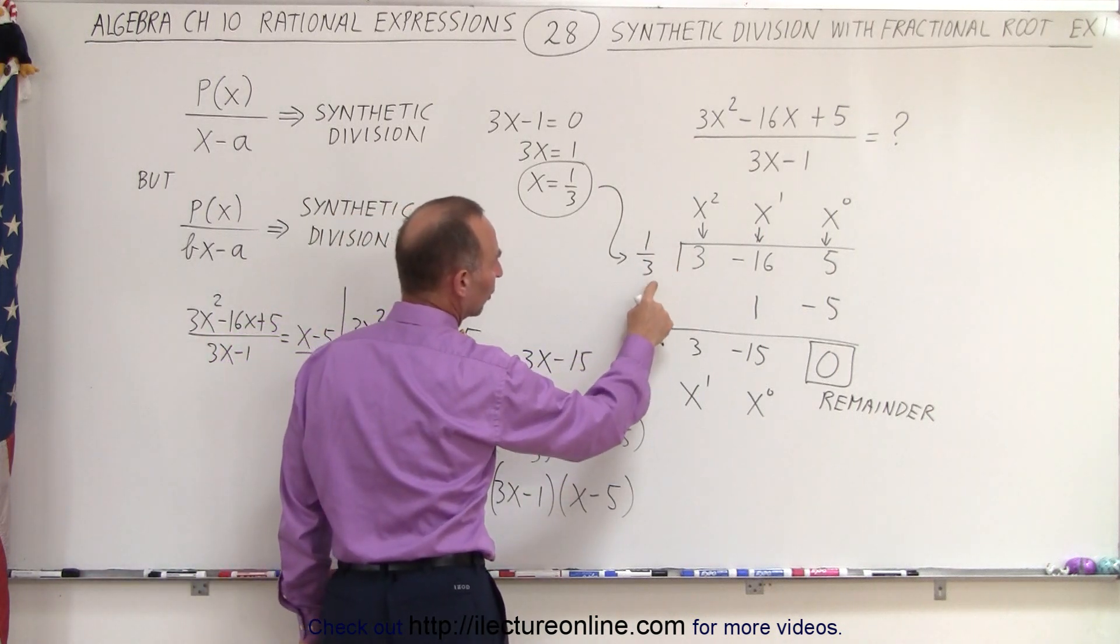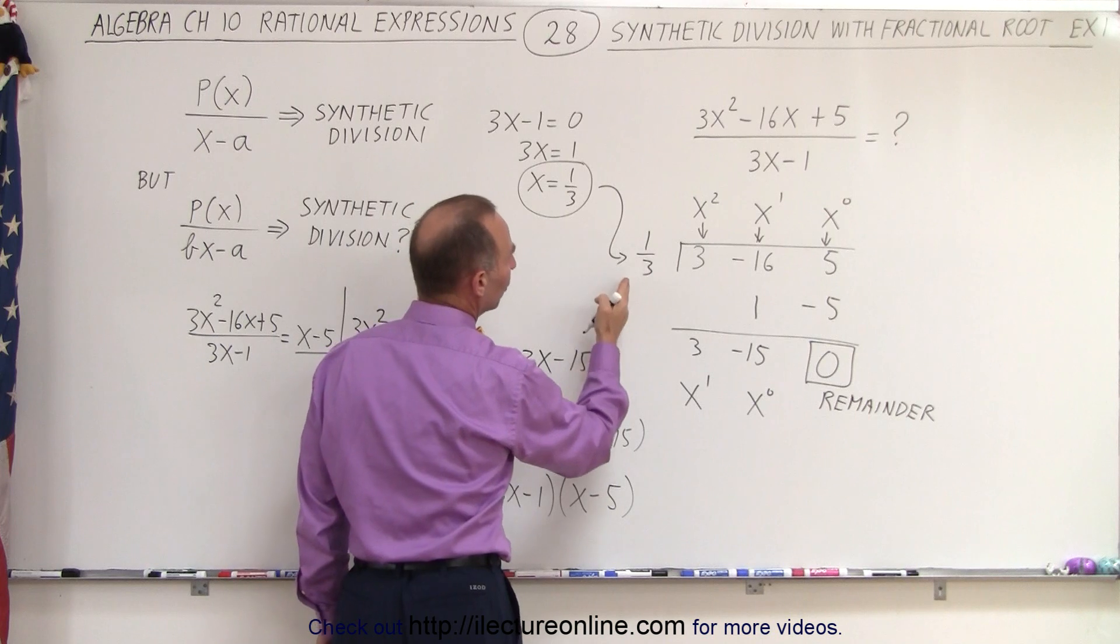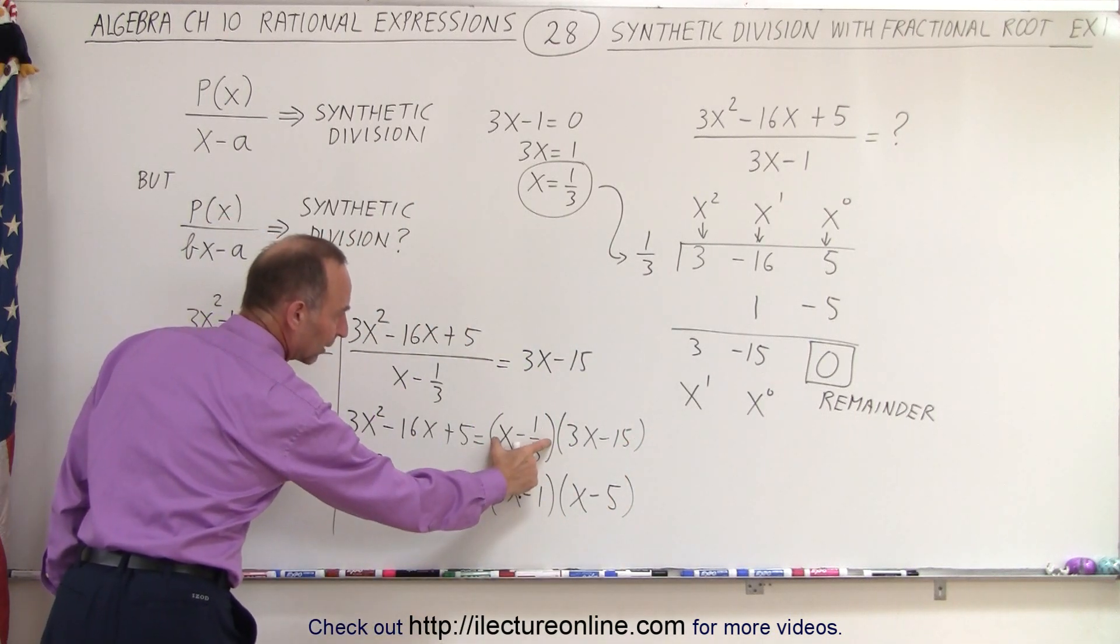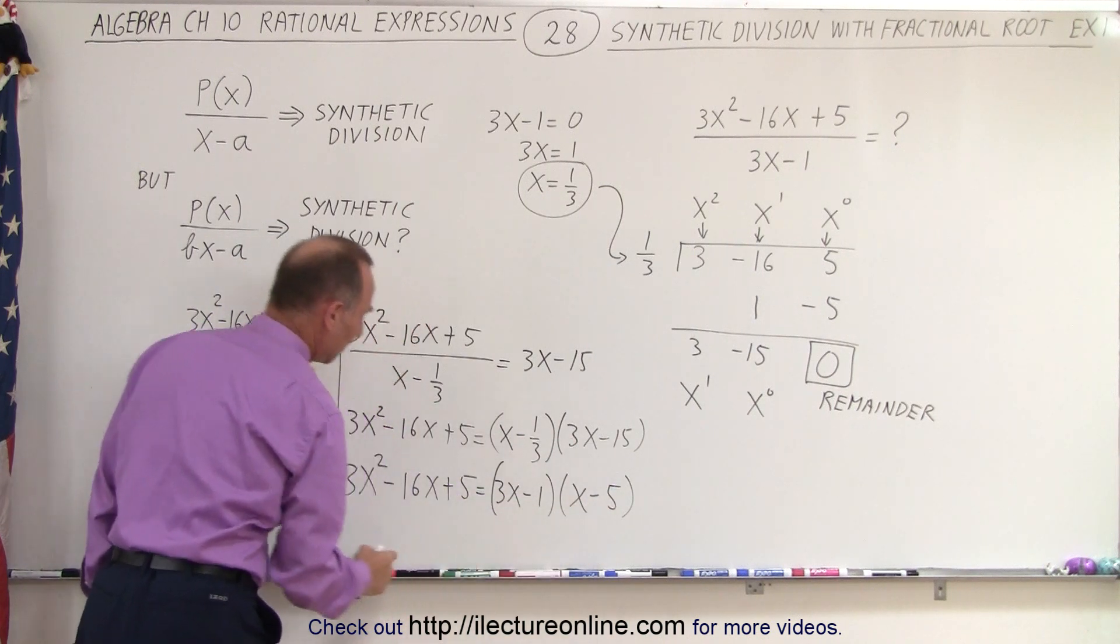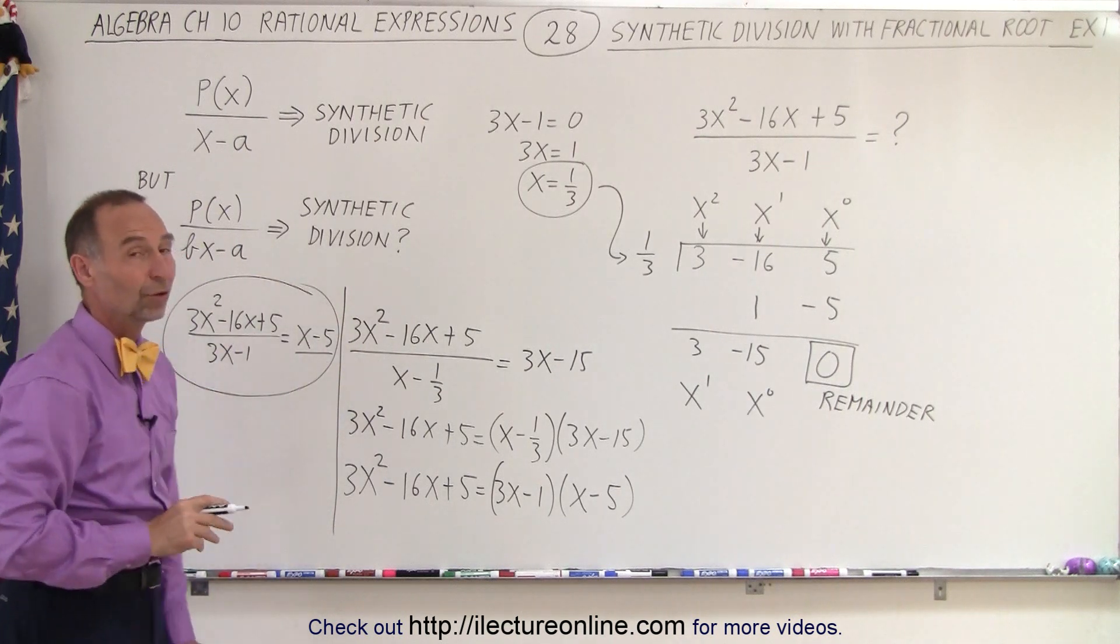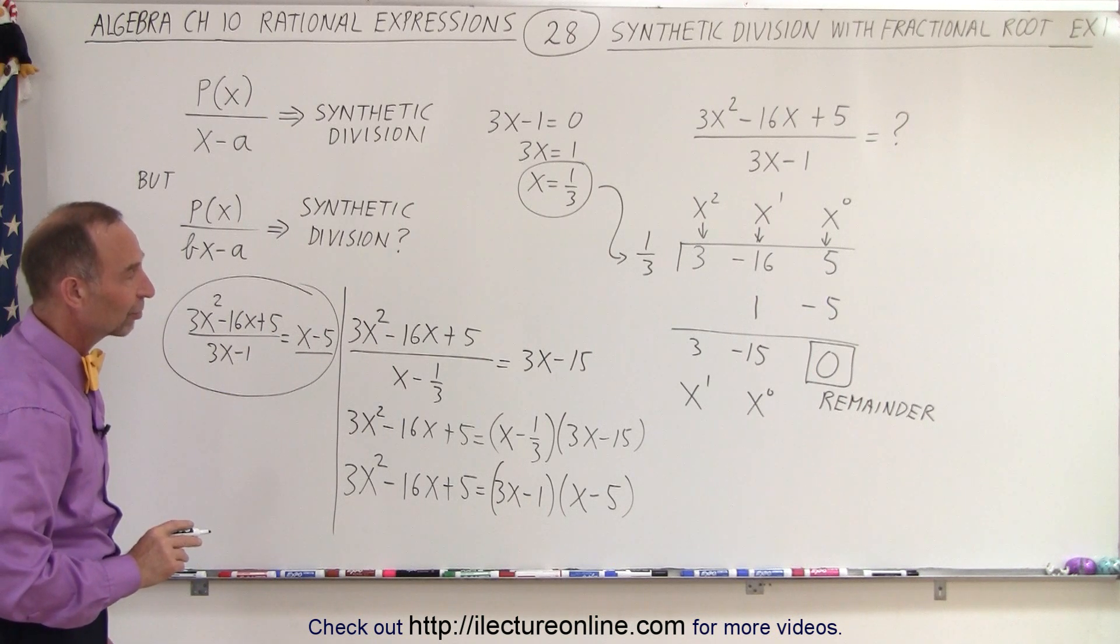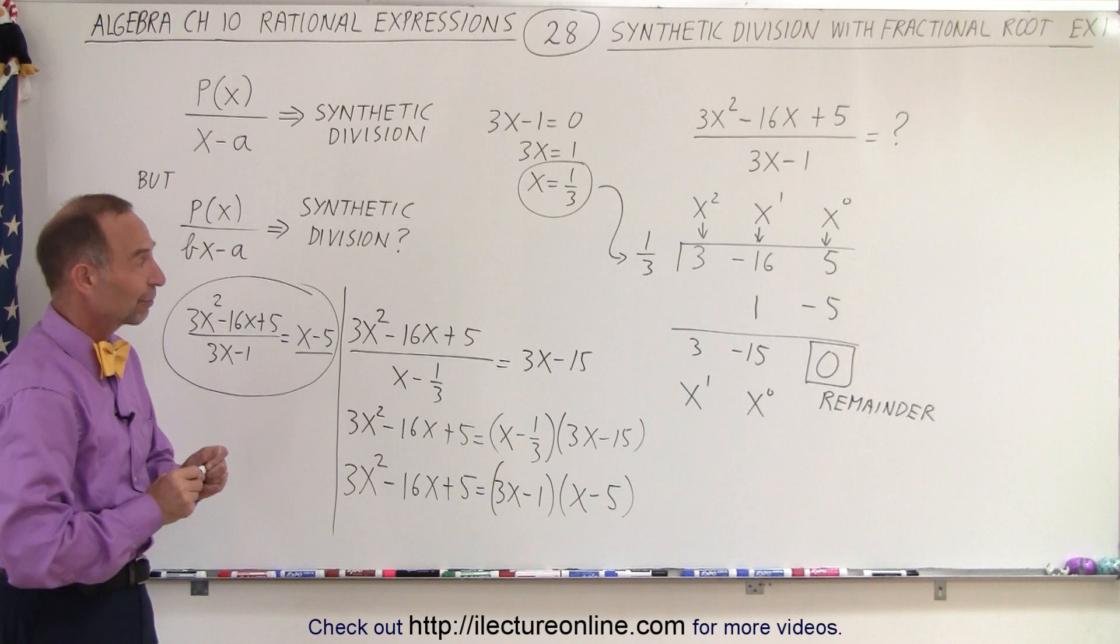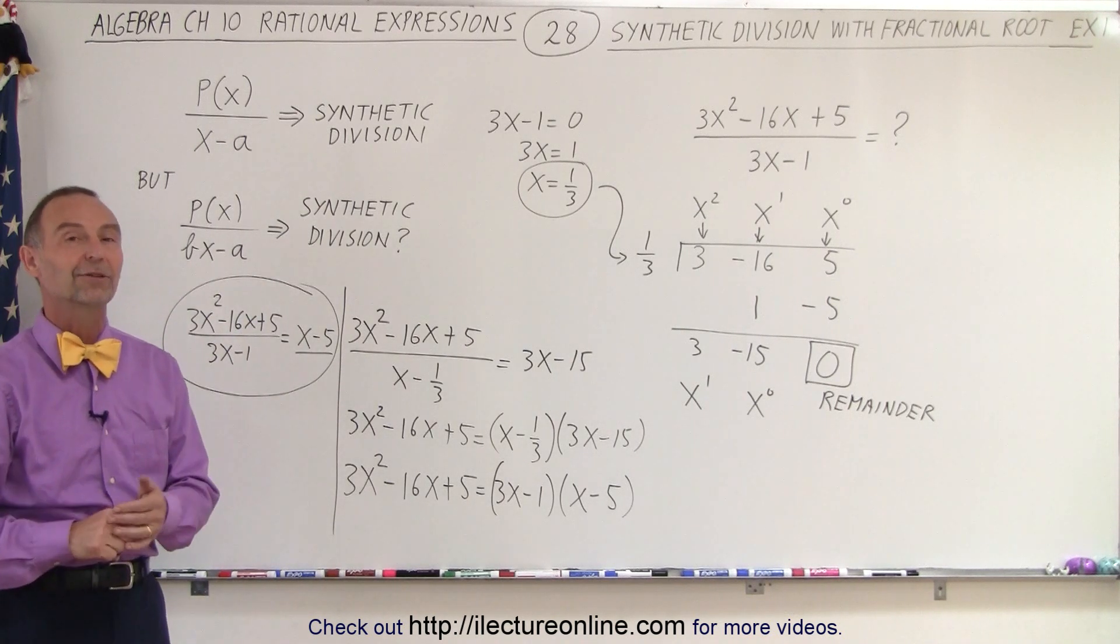Since we used the root 1 third, so then essentially we start with x minus 1 third, we then have to change it back to 3x minus 1 by multiplying this by 3 and then dividing this by 3 so that the product stays the same. And then essentially we have this as our solution. So yes, you can use fractional roots. It takes an extra step to get to the final solution, but that is how you do that. That's the way we work with fractional roots when we use synthetic division.